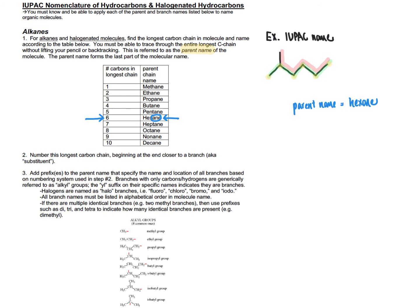Step two: number the longest carbon chain beginning at the end closer to a branch. A branch — also known as a substituent — is any atom not counted in determining the parent chain. Following the green path, any atom not highlighted in green is a branch. Redrawing the structure and re-highlighting the path in green, the atom not accounted for — shown in yellow — is what we call a branch.